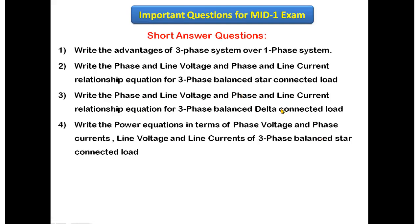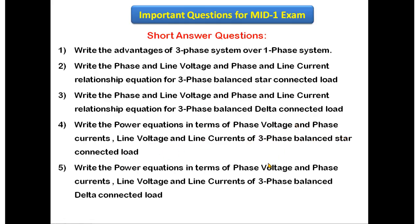The next questions are: write the power equations in terms of phase voltage, phase currents, line voltage, and line currents for a three-phase balanced star connected load — write the four power formulas. Similarly, write the power equations in terms of phase voltage, phase currents, line voltage, and line currents for a three-phase balanced delta connected load.